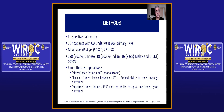We had 167 knees with osteoarthritis and 209 primary knee replacements. Mean age was 66.4 years, with demographic distribution mirroring the Singapore population. At six months post-surgery we divided patients into three groups: sitters with flexion less than 100 degrees, kneelers with 100 to 130 degrees, and squatters able to flex more than 130 degrees.